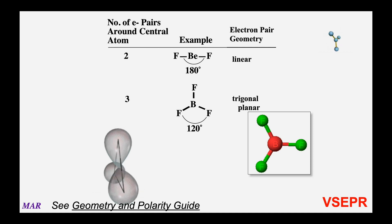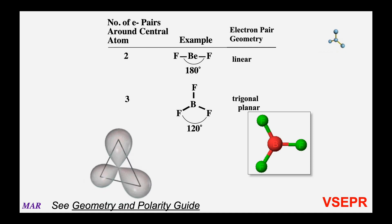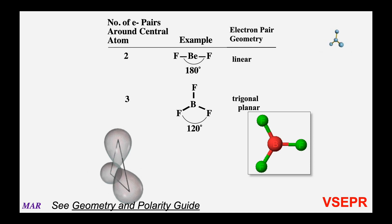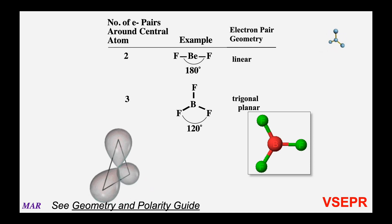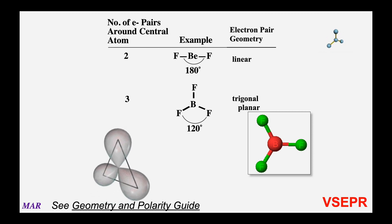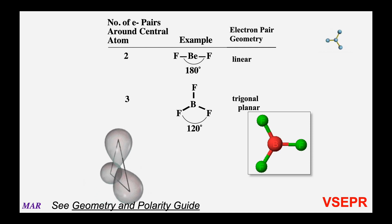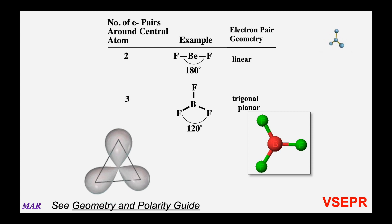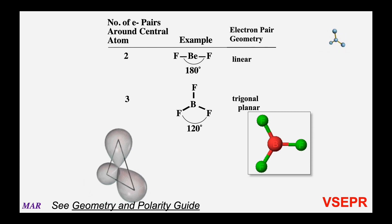As a quick reminder, a circle is 360 degrees. So if you have three 120-degree angles, that's 360. In the linear case, you'd have two 180-degree angles for 360. Sometimes trigonal planar is called planar triangle — either one is totally fine.